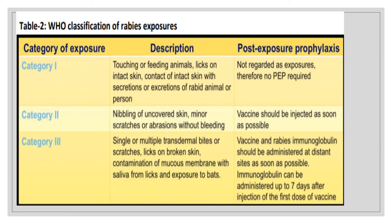Category 1 includes touching or feeding an animal, or licks on intact skin — no treatment needed. Category 2 includes minor scratches or abrasions without bleeding, and nibbling of uncovered skin — rabies vaccine and 10-day dog observation are indicated. Category 3 includes single or multiple transdermal bites with oozing blood, licks on broken skin or mucous membranes, and fresh wounds — both vaccine and rabies immunoglobulin are given along with wound management. Direct contact with bats or wild animals is also considered Category 3.